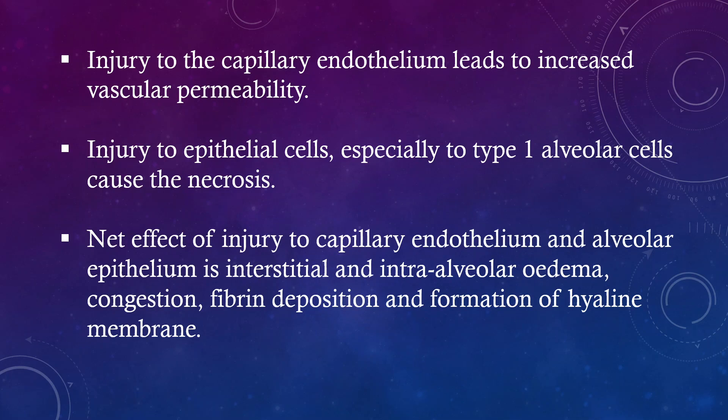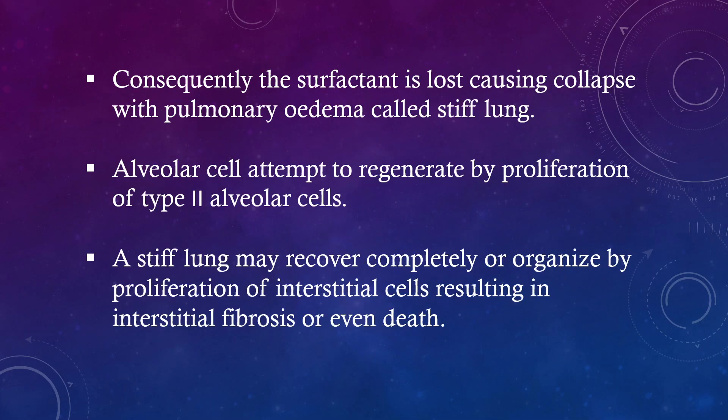Injury to the capillary endothelium leads to increased vascular permeability. Injury to epithelial cells, especially type 1 alveolar cells, causes necrosis. The net effect of injury to capillary endothelium and alveolar epithelium is interstitial and intra-alveolar edema, congestion, fibrin deposition, and formation of hyaline membrane. Consequently, the surfactant is lost, causing collapse with pulmonary edema, called stiff lung.